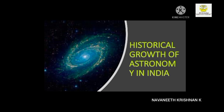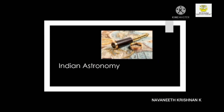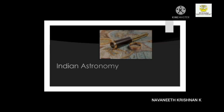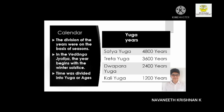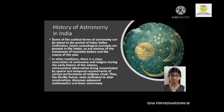Historical Growth of Astronomy in India: Indian astronomy history stretches from prehistoric to modern times. Indian astronomy can be dated to the period of Indus Valley civilization or earlier. The oldest known text about astronomy is Vedanga Jyotisha. The division of the years was based on seasons; in the Vedanga Jyotisha, the beginning of the year starts with the winter solstice. Time was divided into Yuga, or ages.